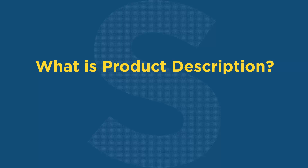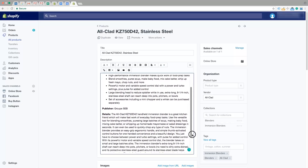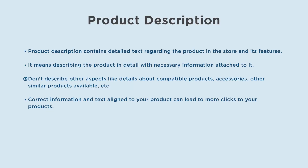Product description contains detailed text regarding the product in the store and its features. It means describing the product in detail with necessary information attached to it. Don't describe other aspects like details about compatible products, accessories, or other similar products available. Correct information and text aligned to your product can lead to more clicks to your products.